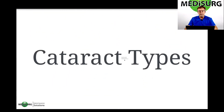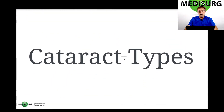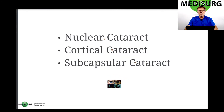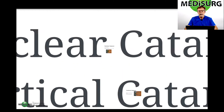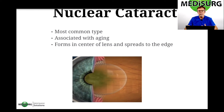Now there are different types of cataracts: the nuclear, cortical, and the subcapsular. The nuclear cataract is the most common type. It's associated with aging and it forms in the center of the lens and progresses outward.